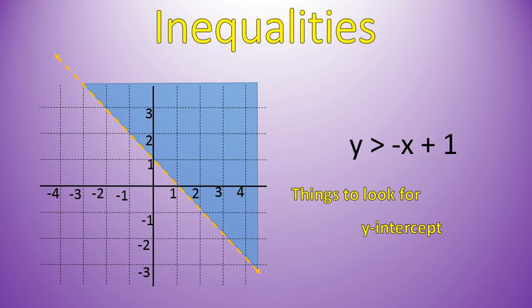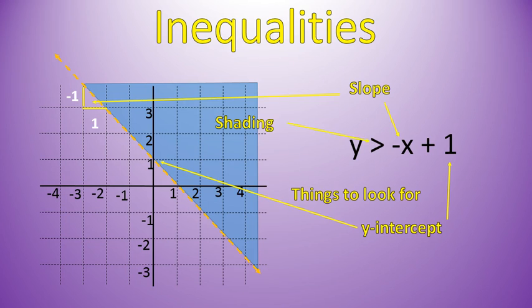Things to look for. One, the y-intercept. Just like before, you want to look for the y-intercept. If it matches that number at the end, great. Then that is one of the three things you need to look for. The second thing, just like before, is our slope. This one has negative x. That means it's negative 1x, or it's going down 1 over 1. That's our slope right there. And the third thing to look for that's different on this than graphing a line is the shading.